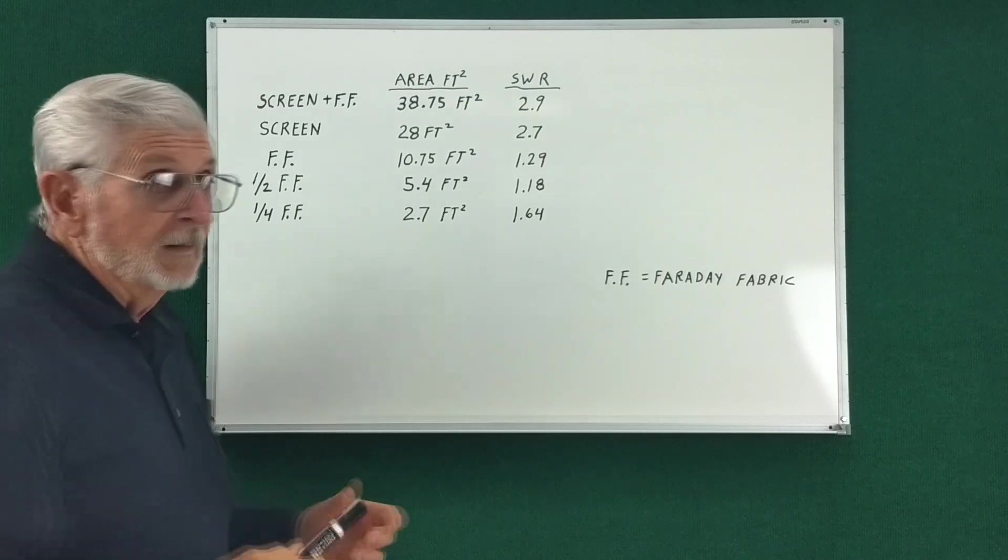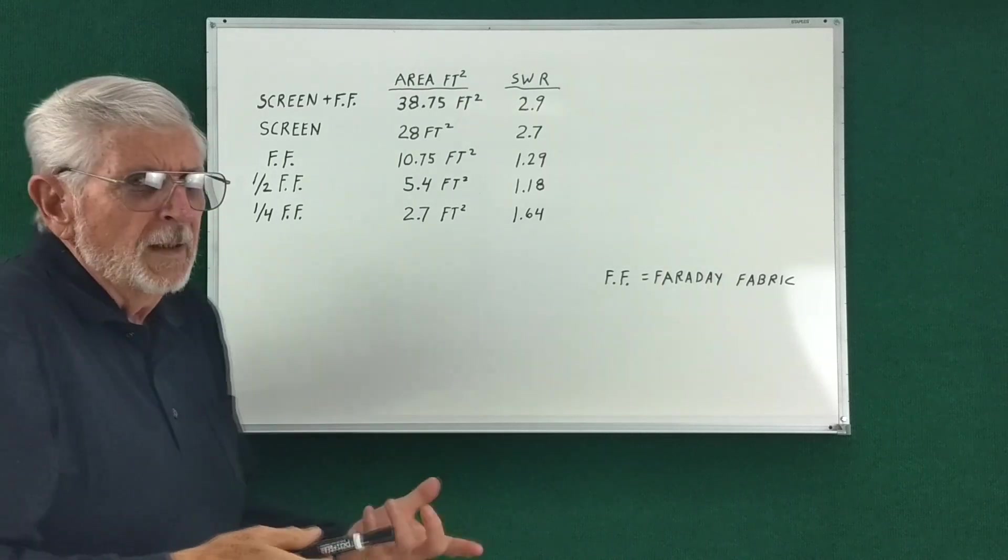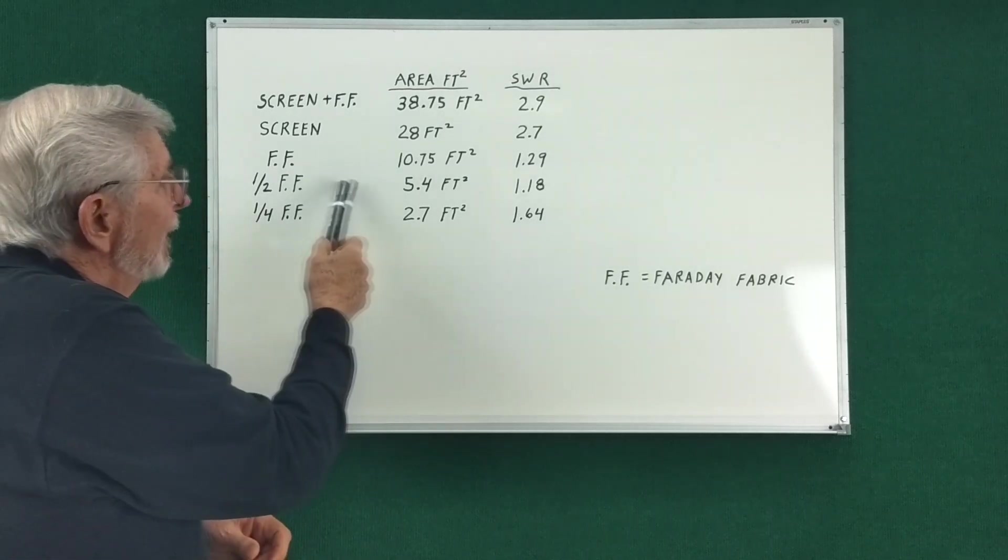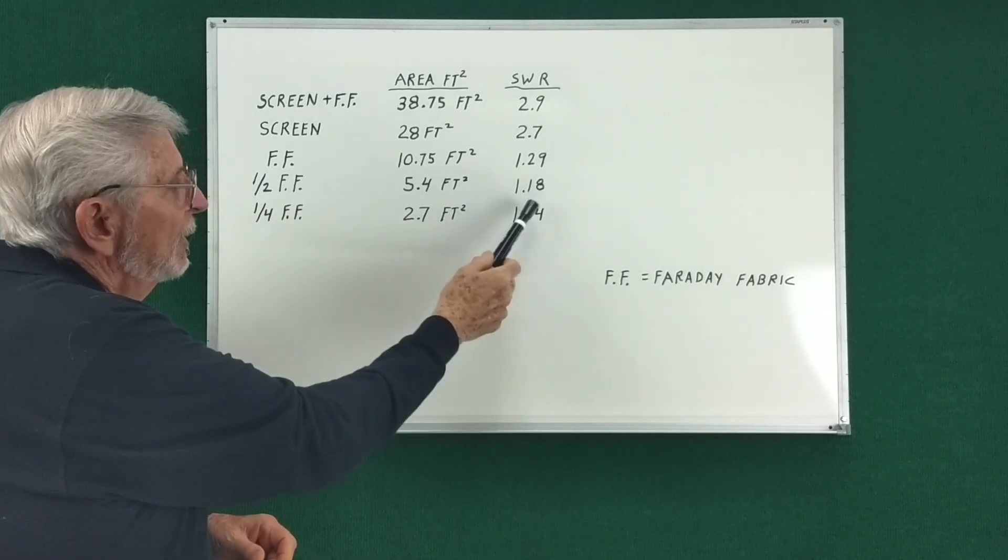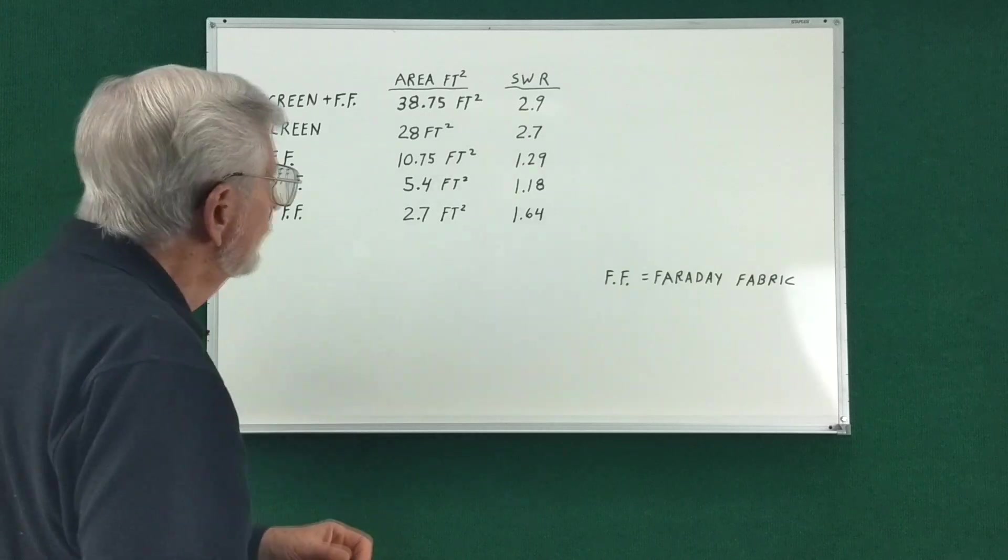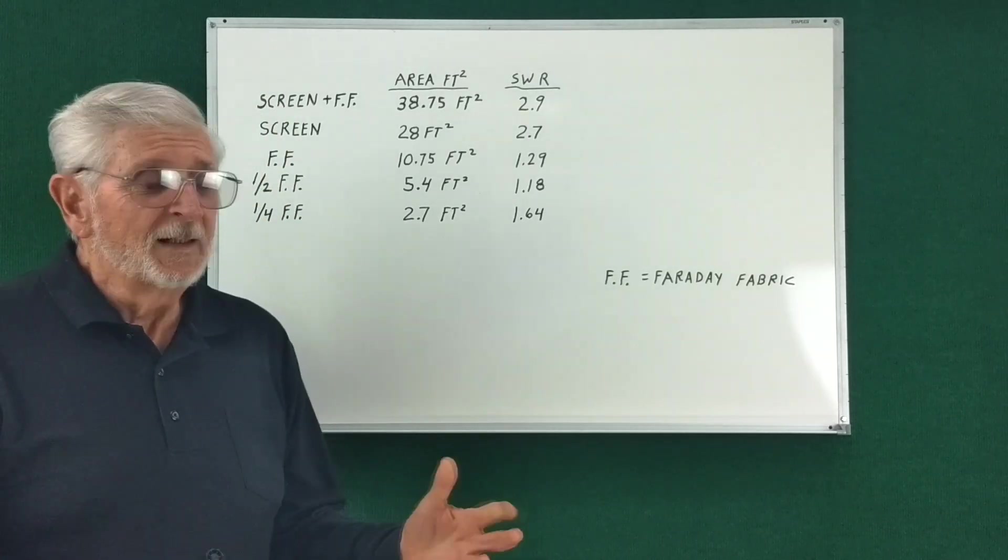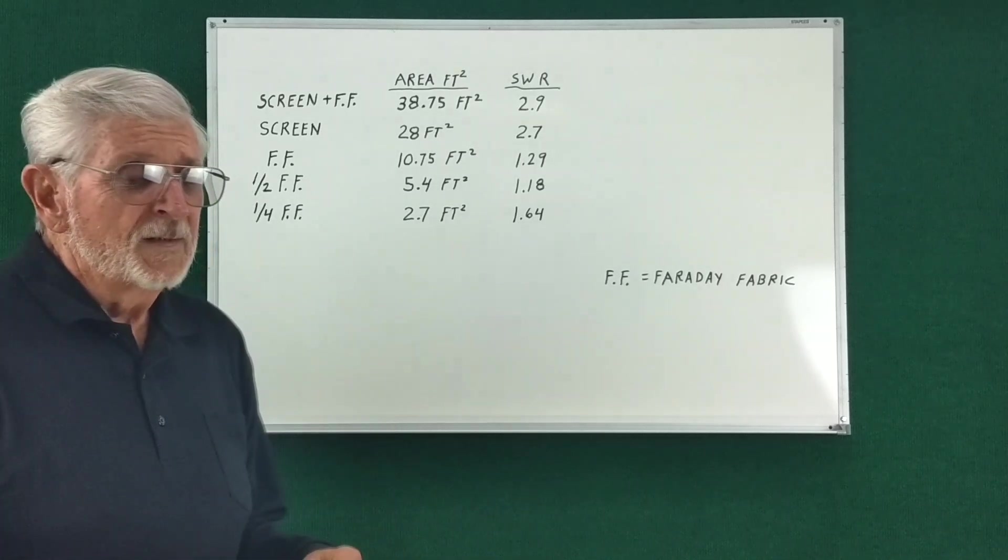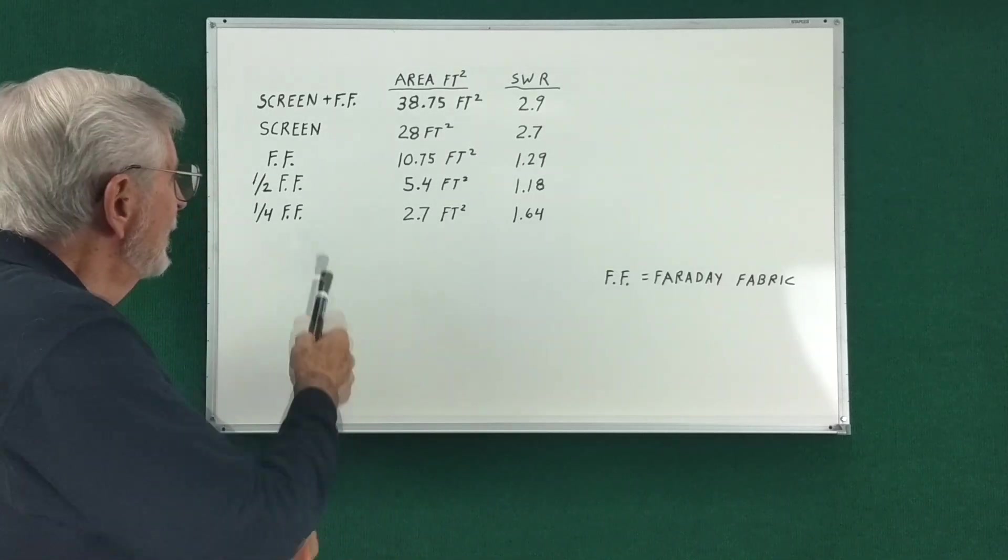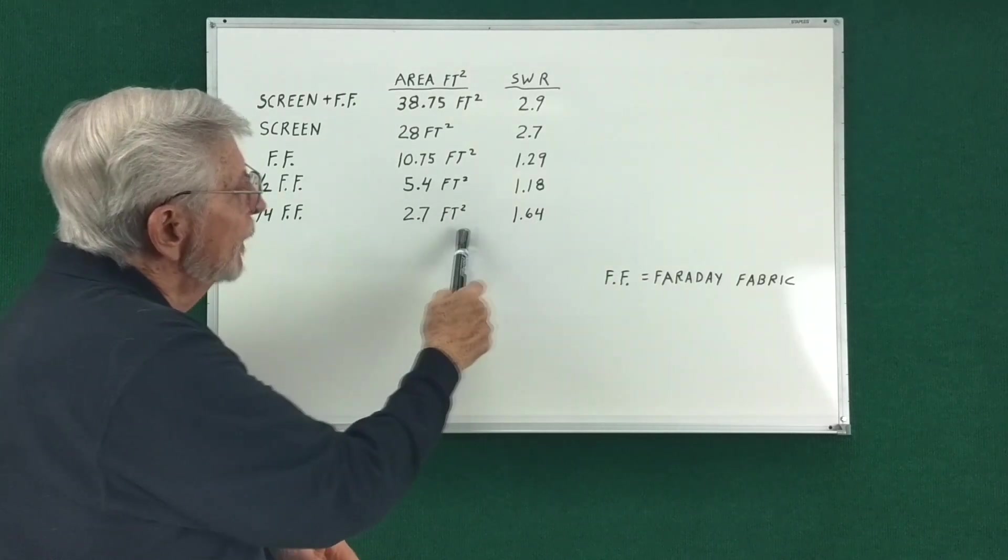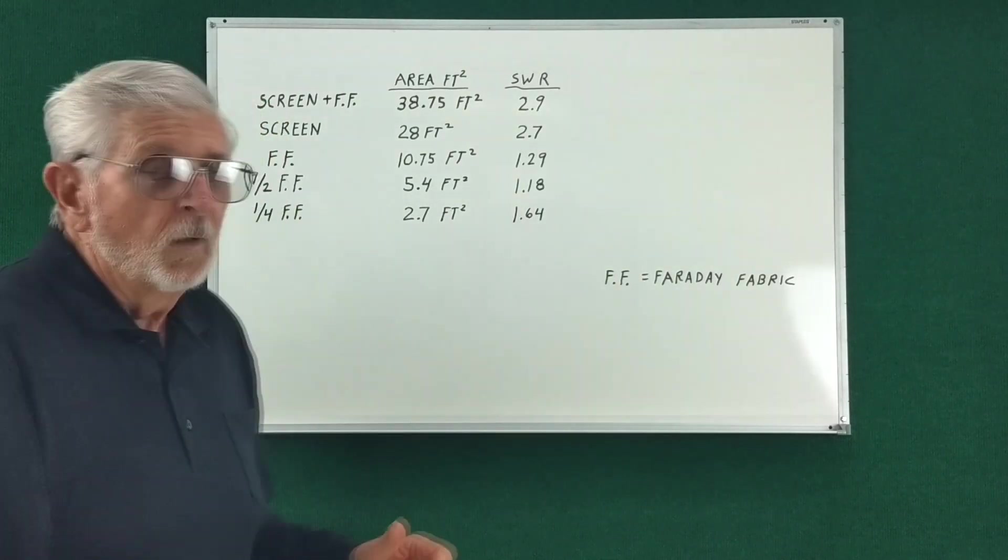So my little brain says, well what if we fold it in half and have half that area, which I did, and the SWR went down even further. This is getting really crazy, so I decided to fold it in half again. Finally, down to 2.7 square feet, the SWR went up.